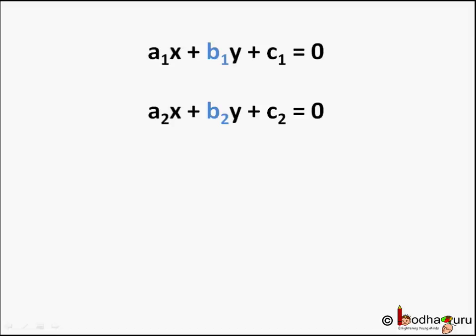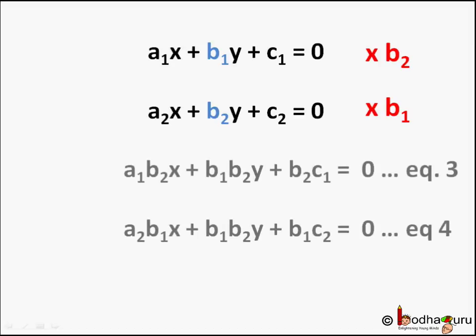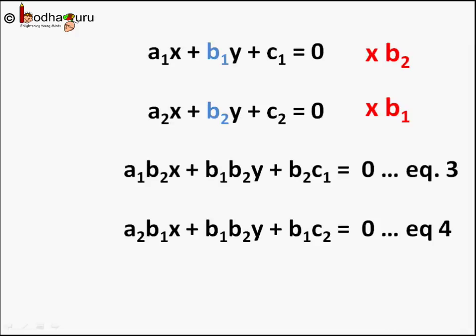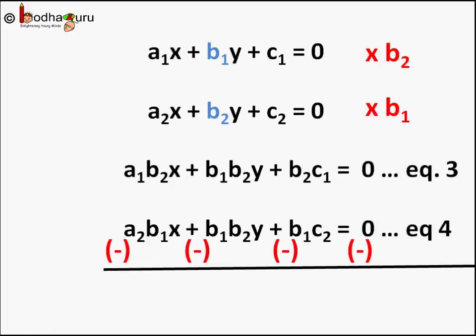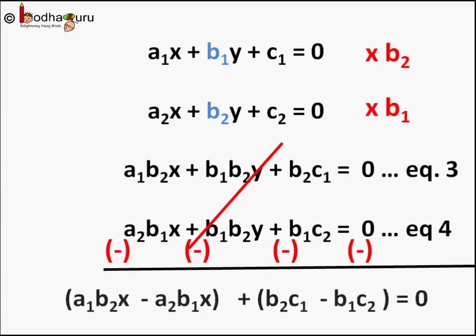Generally, if we use the elimination method, we make the coefficient of one variable the same. Let us multiply equation 1 by B2 and equation 2 by B1 to make the coefficients of Y the same. So it becomes A1B2·X plus B1B2·Y plus B2C1 equal to 0 — that is equation 3. Same way, A2B1·X plus B1B2·Y plus B1C2 equal to 0 — that is equation 4. Now if we subtract equations 3 and 4, Y gets cancelled. So it becomes A1B2·X minus A2B1·X plus B2C1 minus B1C2 equal to 0.